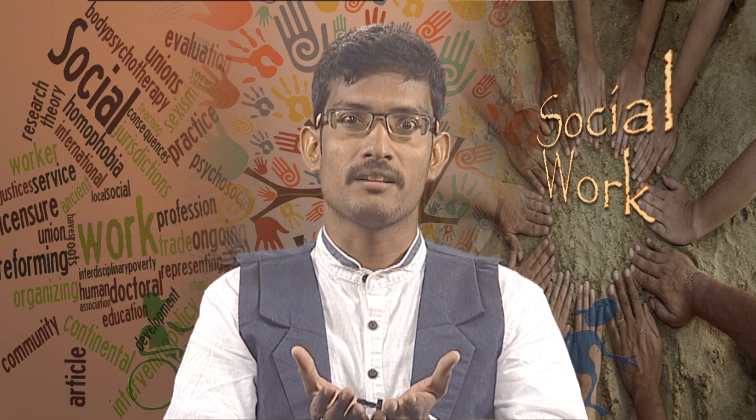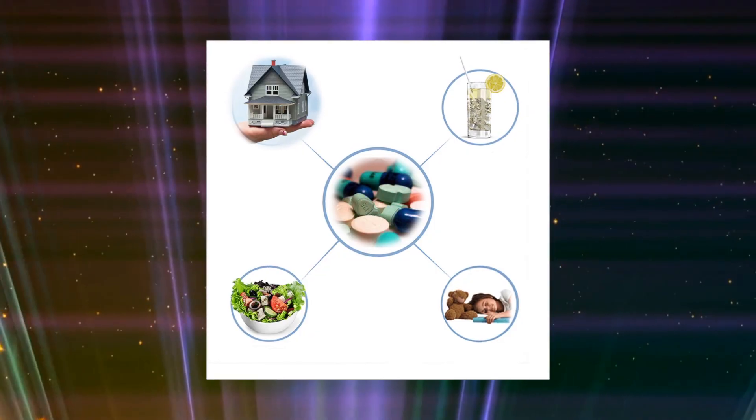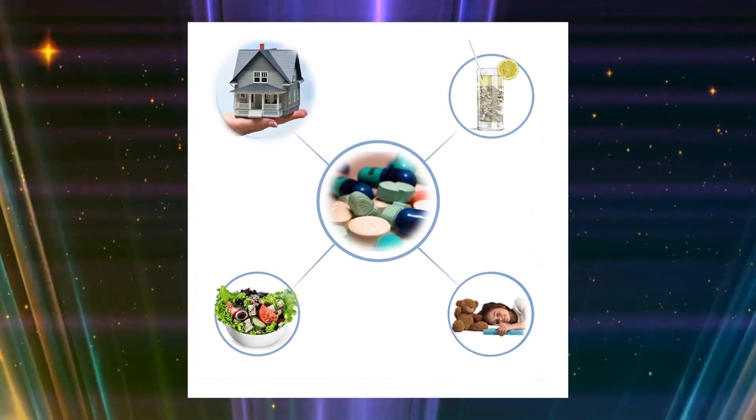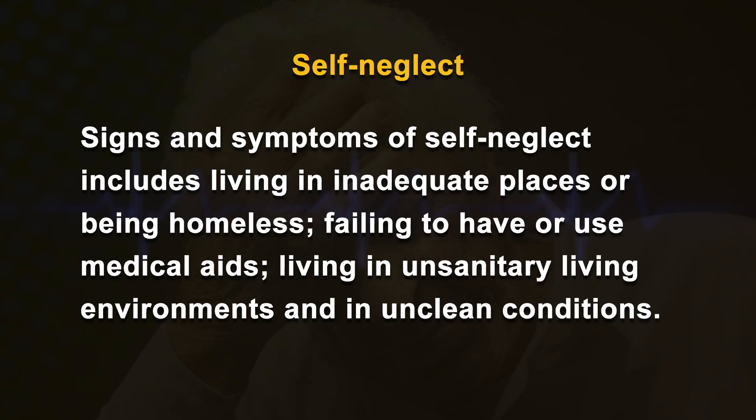Self-neglect among elders is characterized by an elder individual engaging in behaviors that threaten their personal safety or health. It usually occurs when an older person refuses or fails to provide themselves with proper water, food, shelter, clothing, medications, hygiene and safety precautions. Signs and symptoms include living in inadequate places or being homeless, failing to use medical aids, and living in unsanitary or unclean conditions.